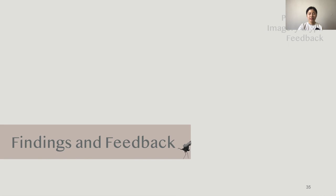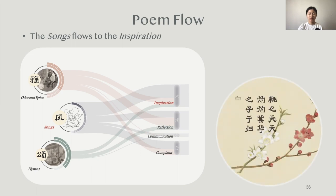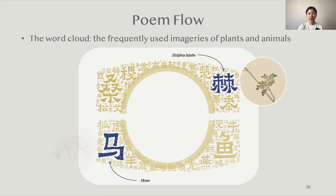We also want to share some interesting findings based on our pictorial. Songs is the genre with the most poems, recording stories among plebeians. This may be because the colorful life of ordinary people gives birth to a large number of ballads. Those poems usually start with natural environments or animals to express people's feelings, which is why many poems in songs flow to the inspiration function. From the word cloud, the most frequently used animal imagery is the horse, which was essential in ancient China for hunting and transportation.